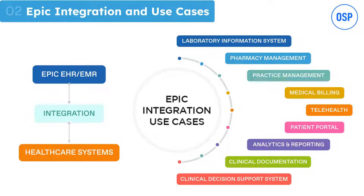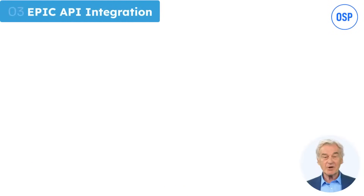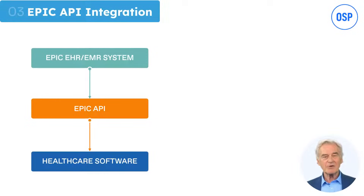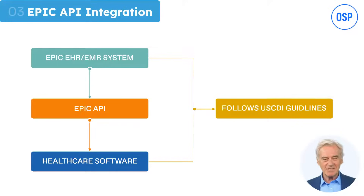You'll see how Epic EHR can integrate with all these health systems. Moving on to another significant part of Epic integration: the Epic API. It's essential to understand that APIs are important for health data exchange, and Epic's API is integral in promoting interoperability. But have you wondered, amidst all this data exchange, where stands the security aspect? In the case of Epic, the API follows USCDI guidelines, ensuring smooth and secure data flow between EHR and other health systems.